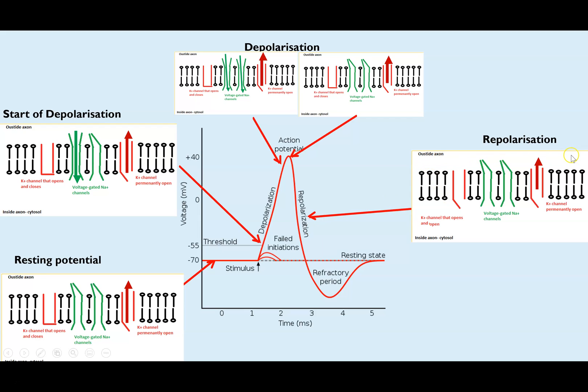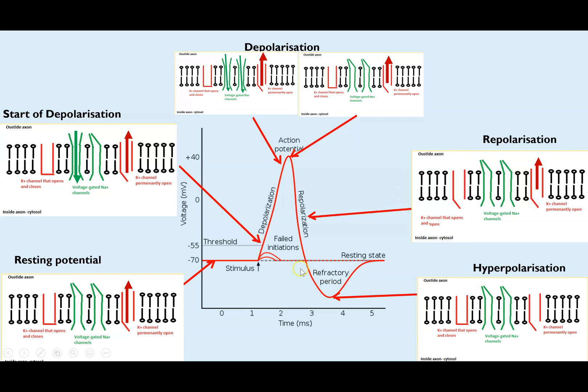So it starts to become more negative again, because comparatively, we now have more positive ions outside compared to inside. Now, this continues to happen to the point where you get this overshoot beyond the resting potential. And we call this the refractory period, where temporarily you go below resting, minus 70, and you reach about minus 80 millivolts.